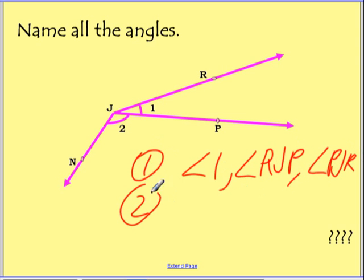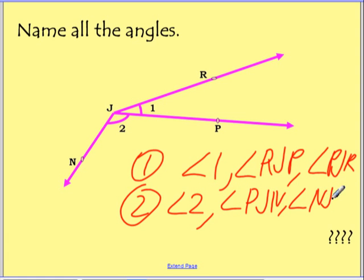There's a second angle in this figure that we could name, and we could call that angle 2. We could call it angle PJN, or we could call it angle NJP.